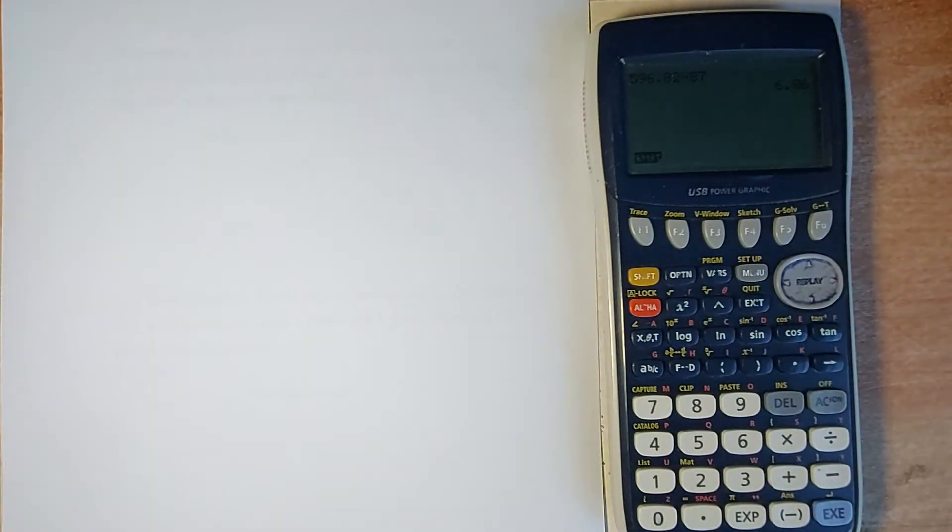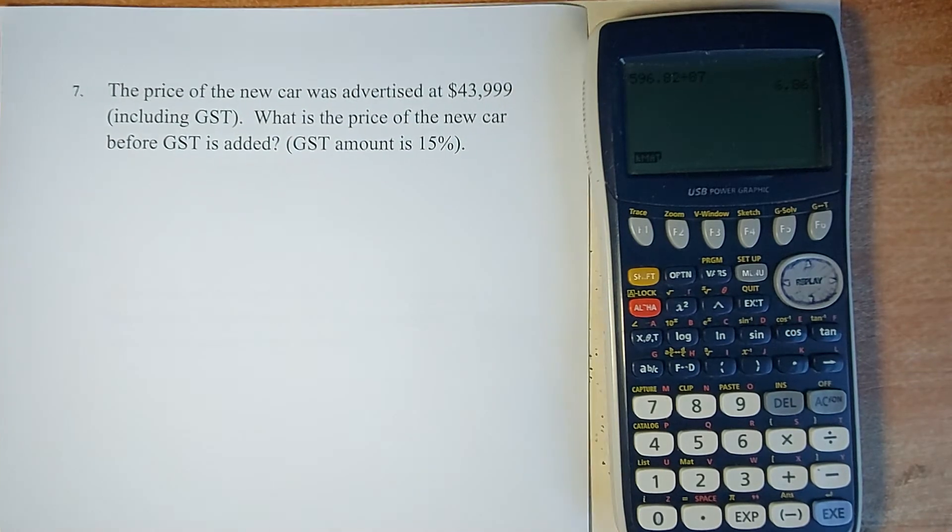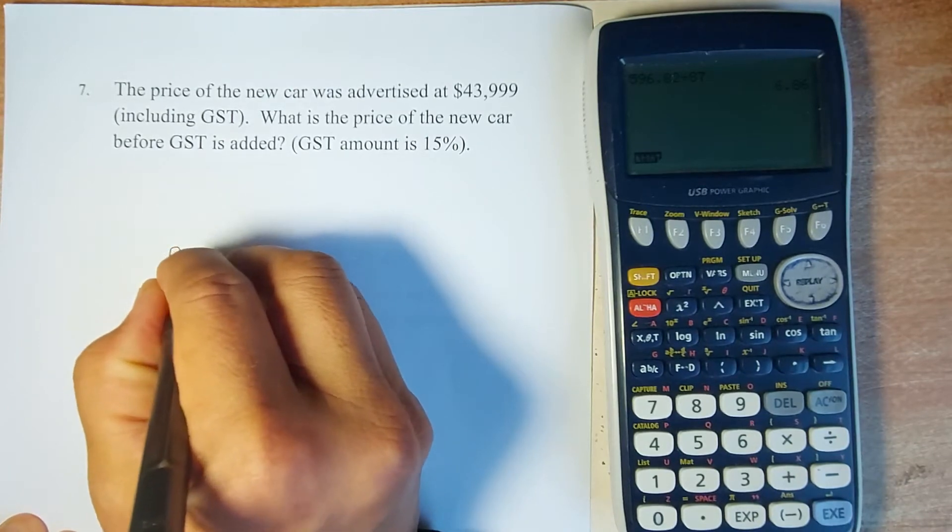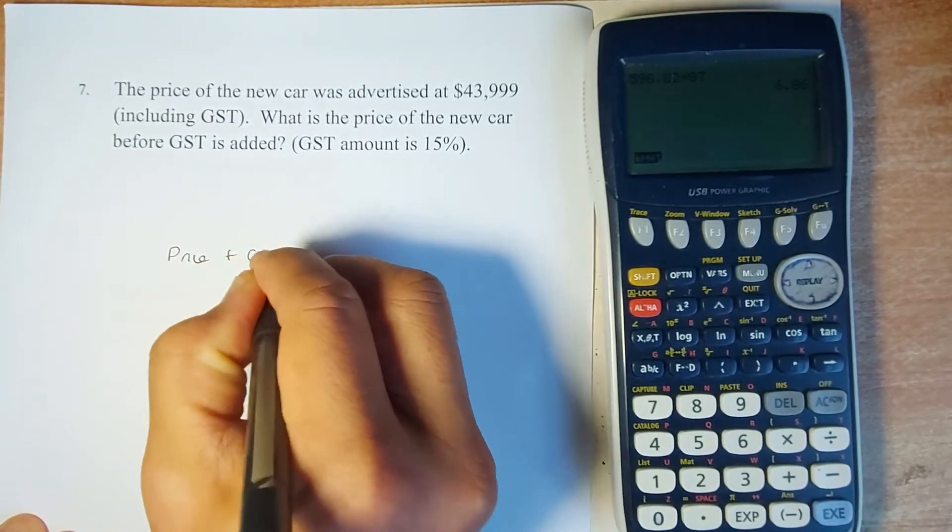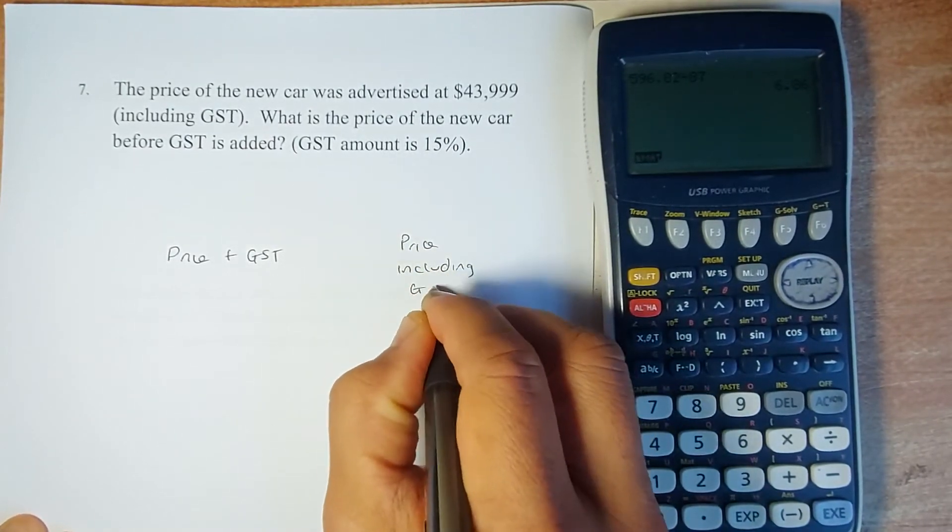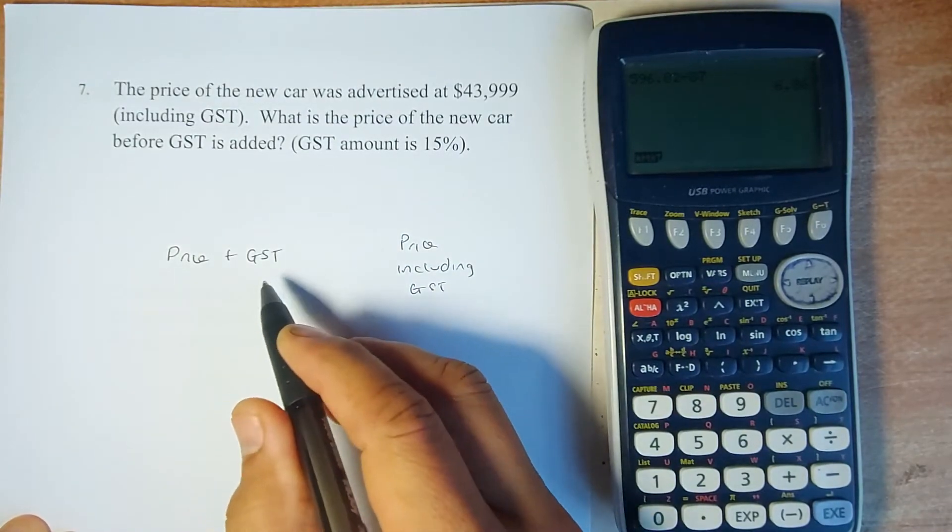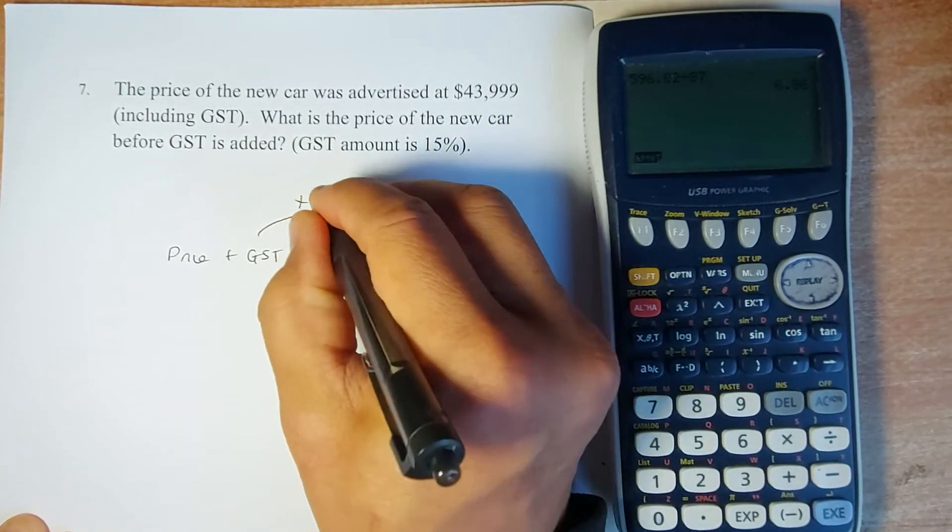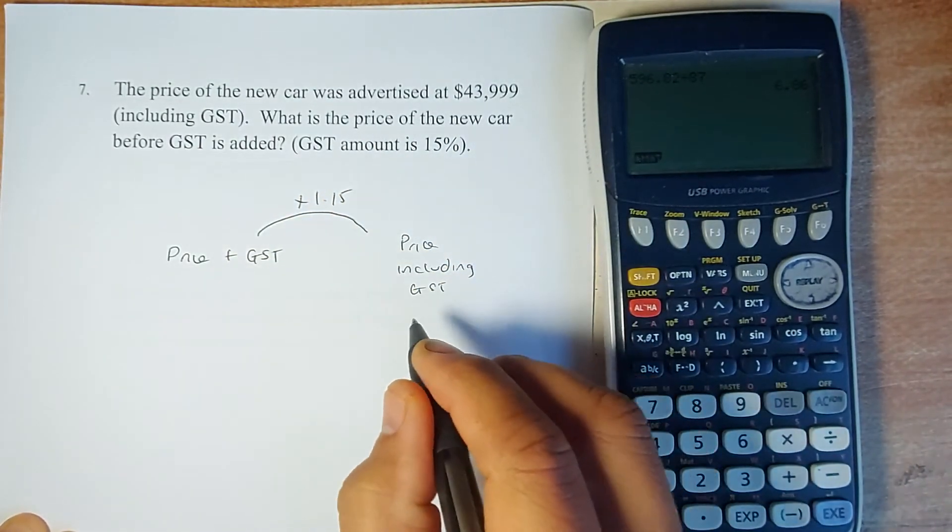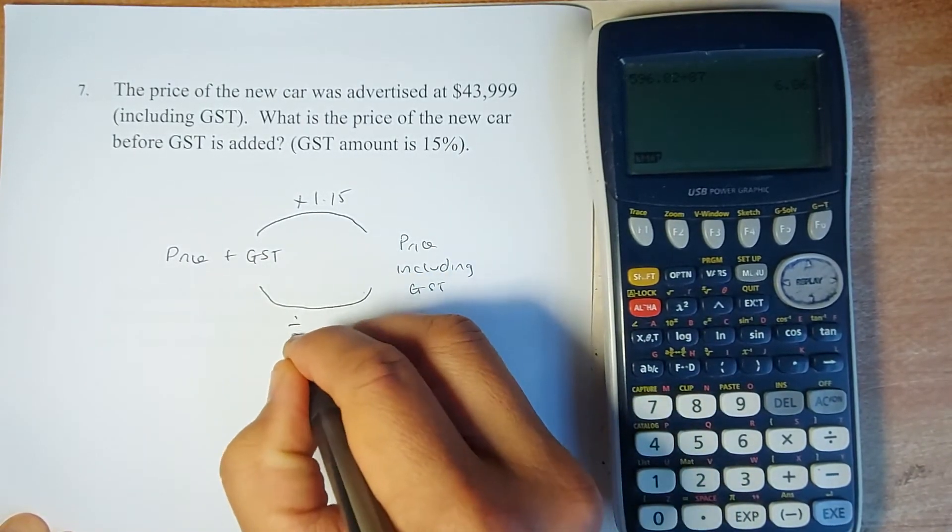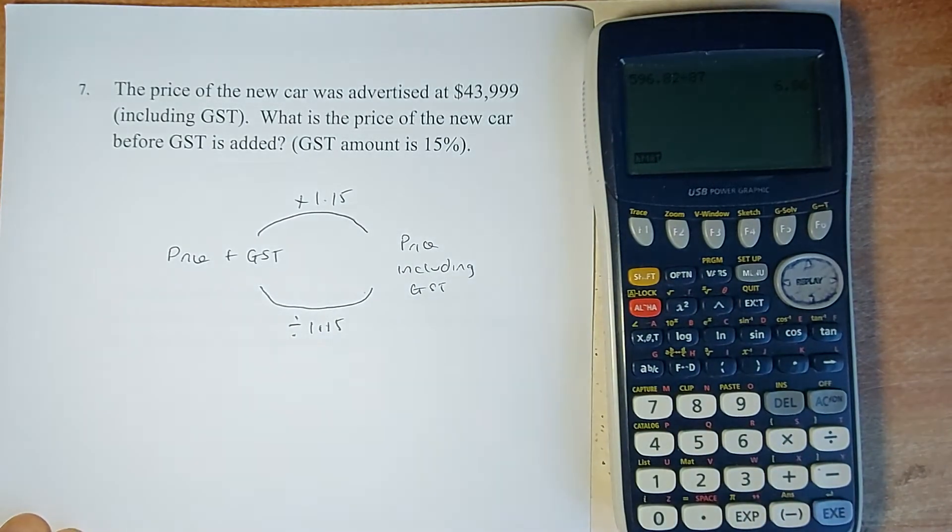The last question for percentages is GST. You need to know there are two types: price plus GST and price including GST. If the price plus GST is given, GST has not been included. If you want to find the price including GST, you multiply that number by 1.15. On the other hand, if price including GST is given and you want to know the price before GST, you divide by 1.15.